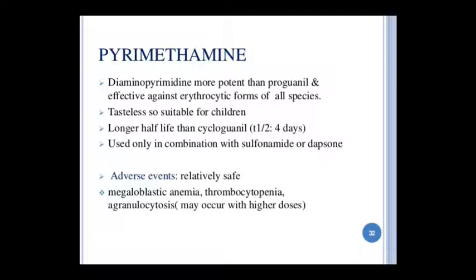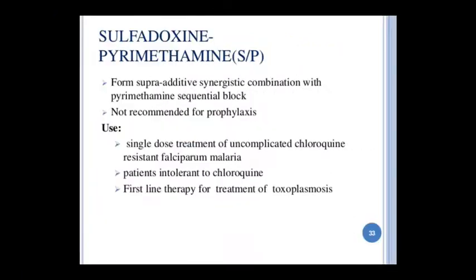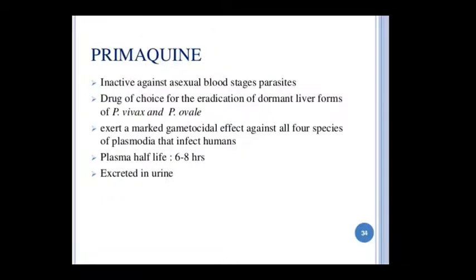Pyrimethamine is effective for erythrocytic forms of all species. It is tasteless so it can be given to children. Its half-life is longer than cycloguanil — two to four days. It is used only in combination, such as with sulfadoxine-dapsone. Adverse events: megaloblastic anemia, thrombocytopenia, and agranulocytosis at higher doses. Sulfadoxine-pyrimethamine is a supra-additive synergistic combination providing sequential blockade. It is not used for prophylaxis; it is a single-dose treatment for uncomplicated chloroquine-resistant falciparum malaria or when patients are intolerant to chloroquine. It is the first-line therapy for toxoplasmosis treatment.